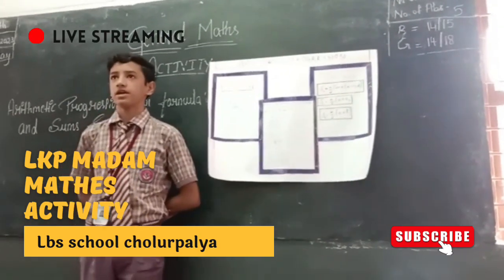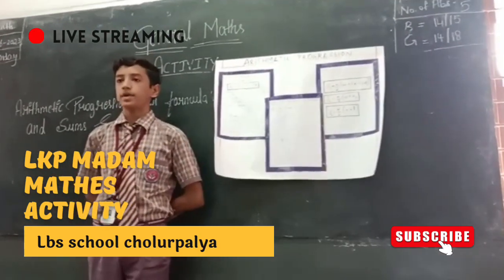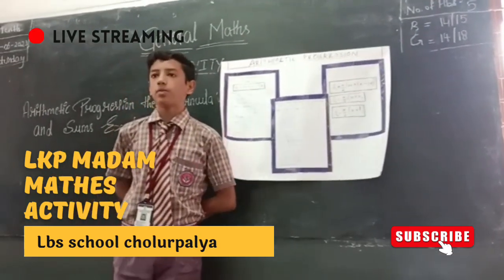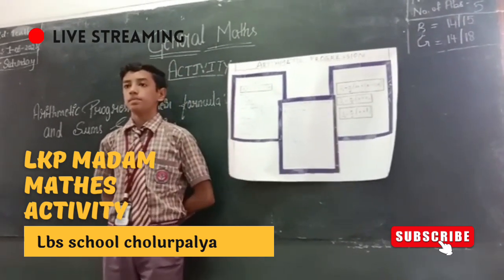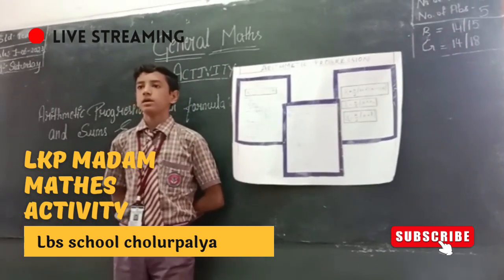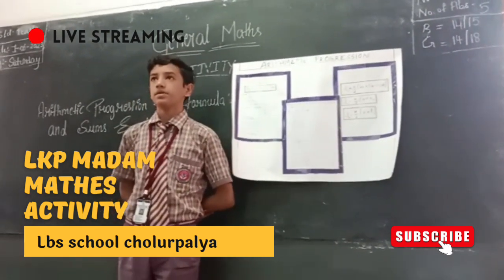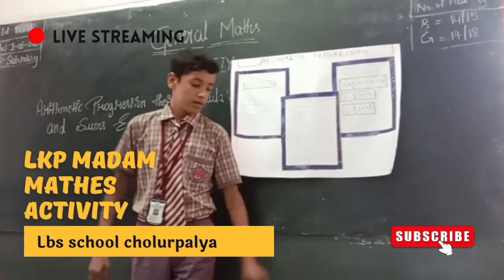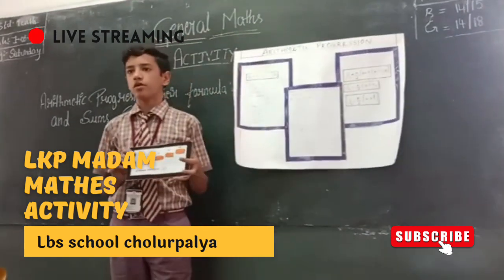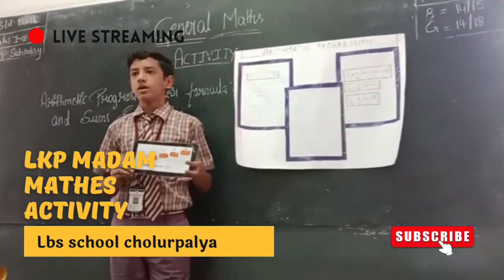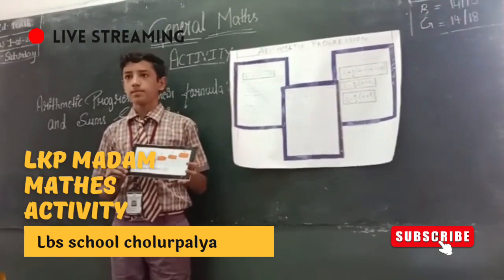An Arithmetic Progression is a list of numbers in which each term is obtained by adding a fixed number to the preceding term, except the first term. This is a model of an AP showing the common difference D is equal to 3.